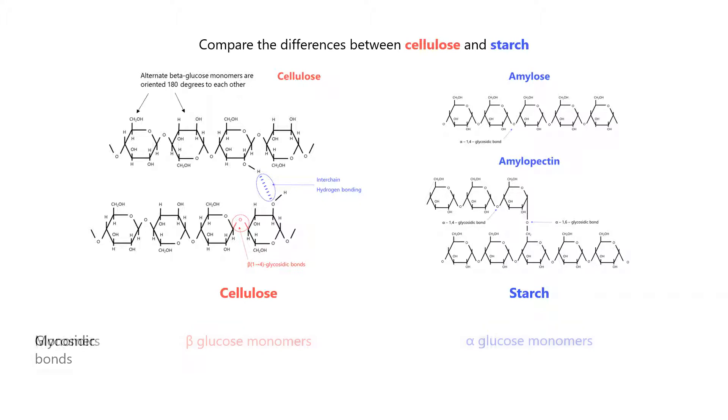Next, let's compare the glycosidic bonds between the glucose monomers. In cellulose, the glucose monomers are linked by beta-1,4 glycosidic bonds. In starch, the glucose monomers of amylose are linked by alpha-1,4 glycosidic bonds, while the glucose monomers of amylopectin are linked by alpha-1,4 and alpha-1,6 glycosidic bonds.